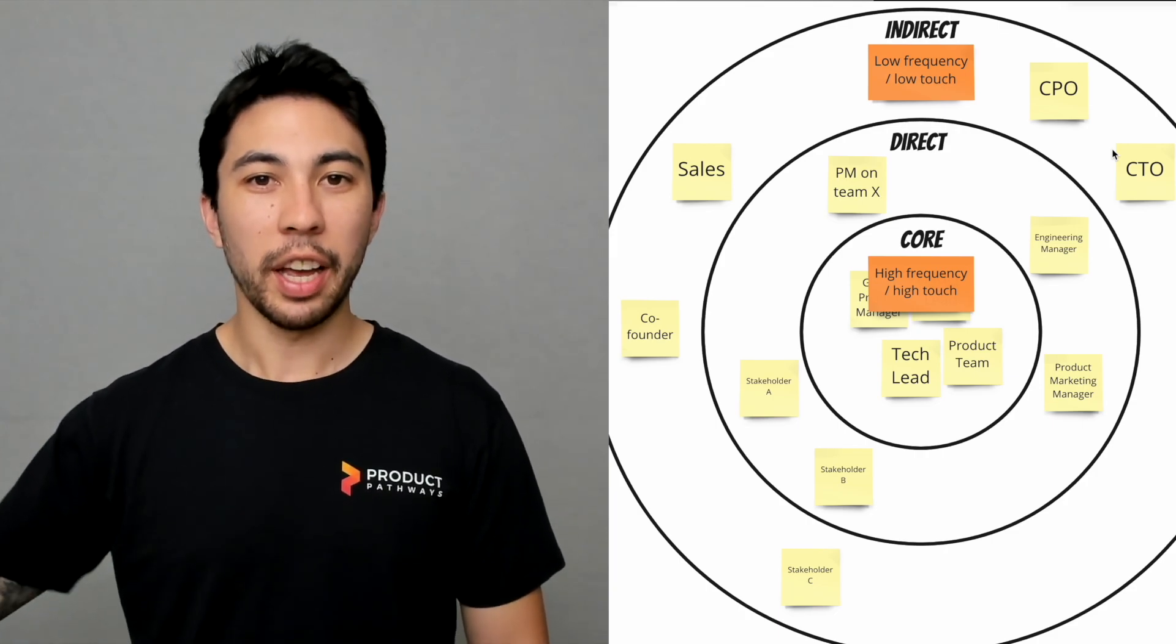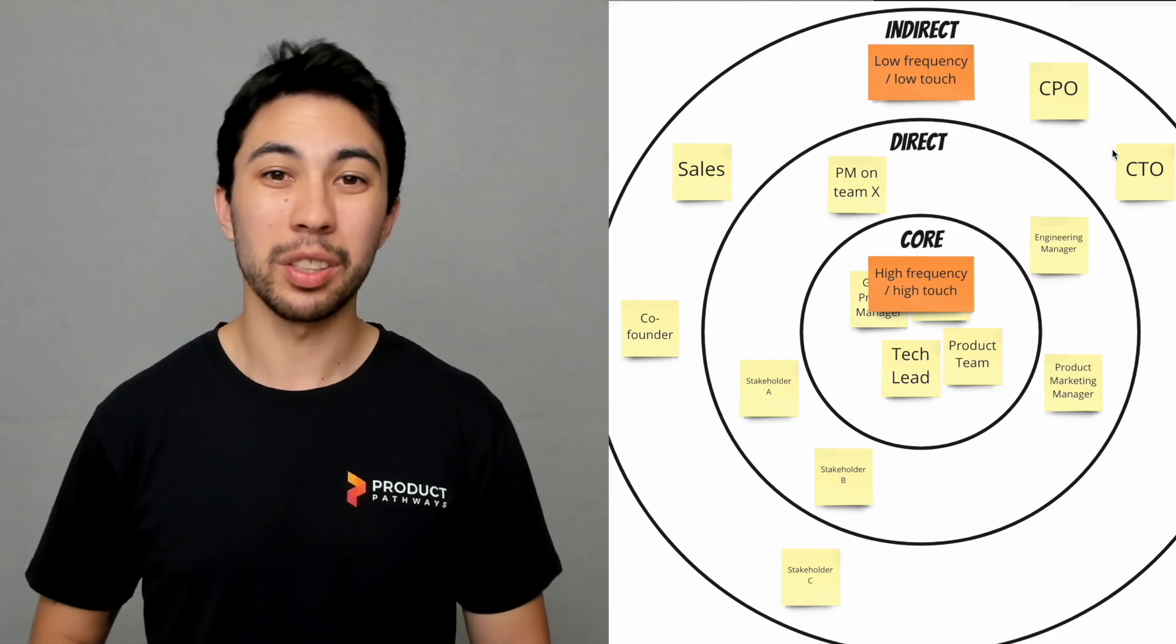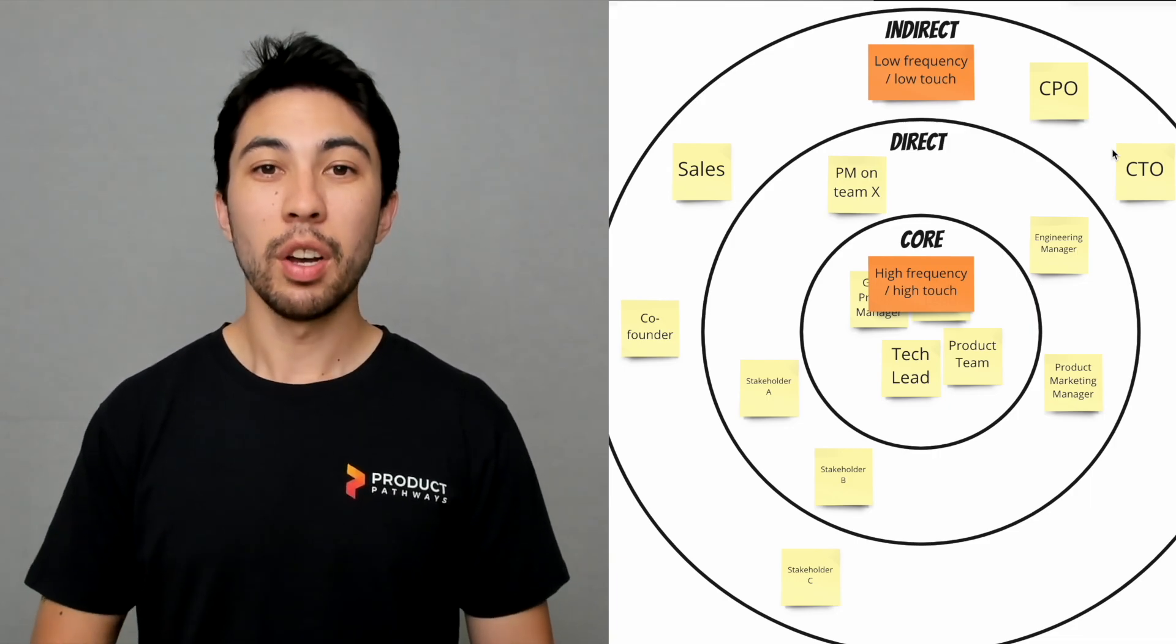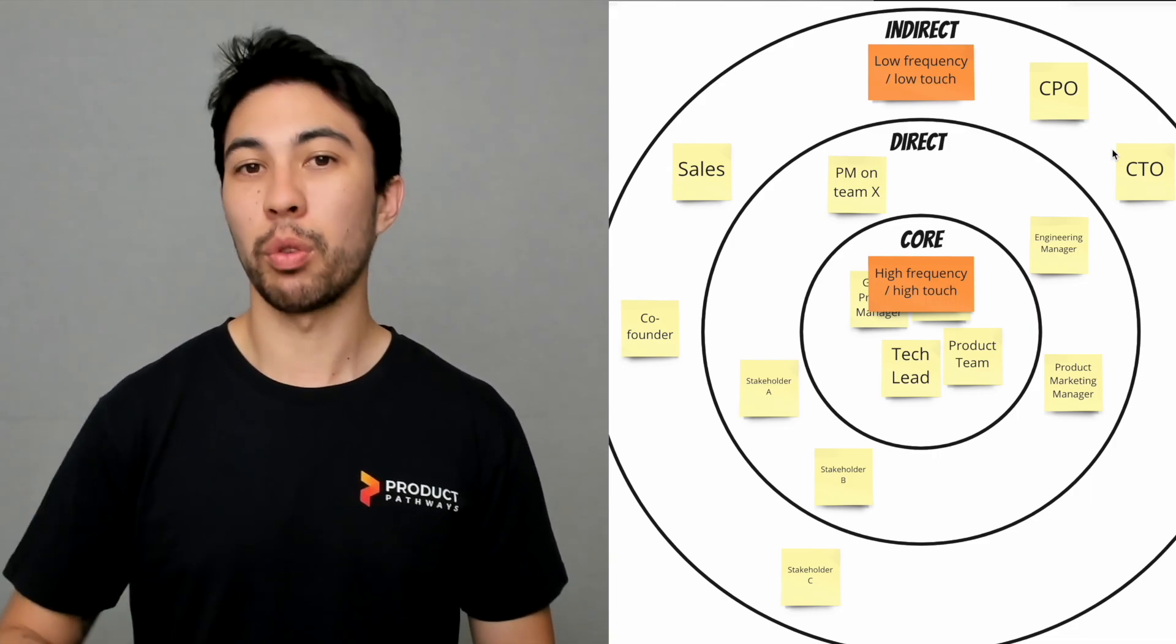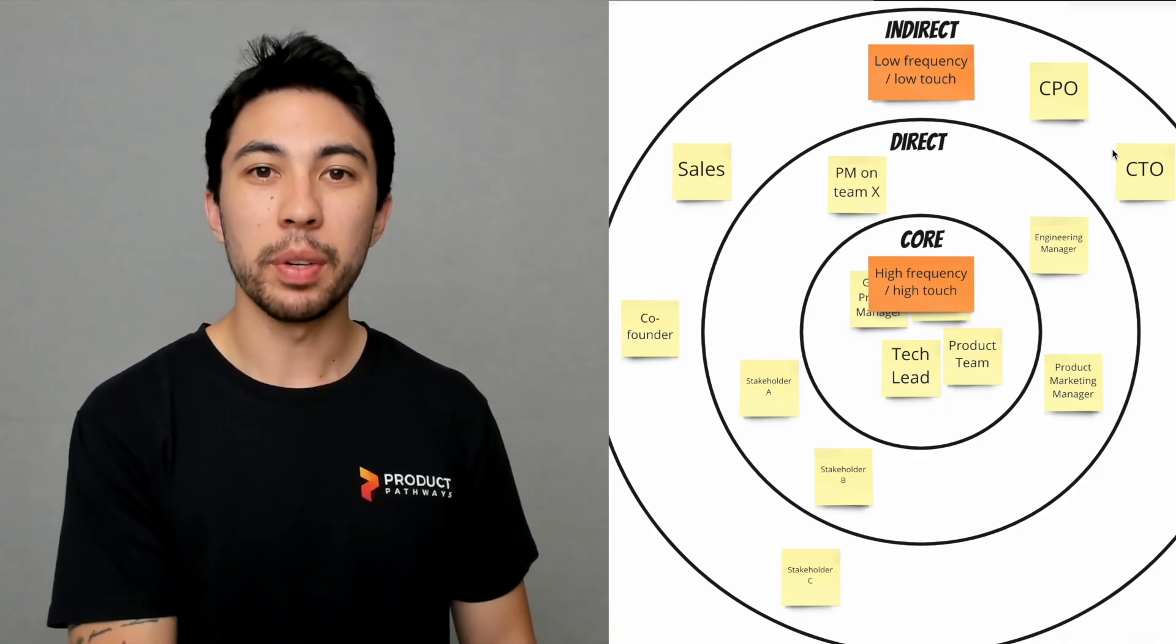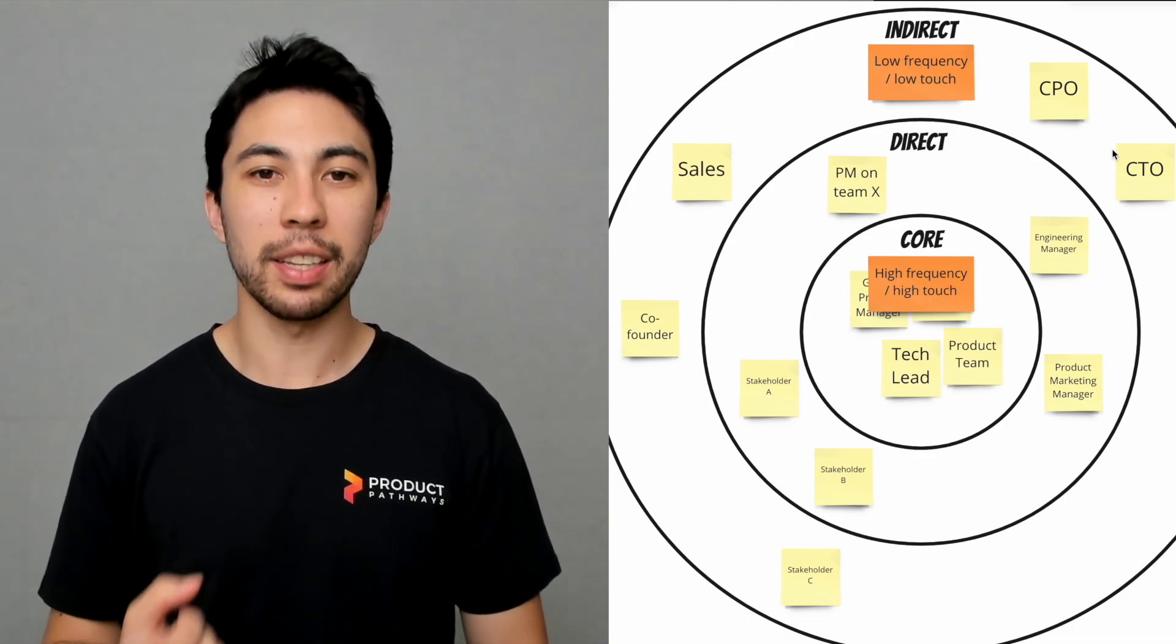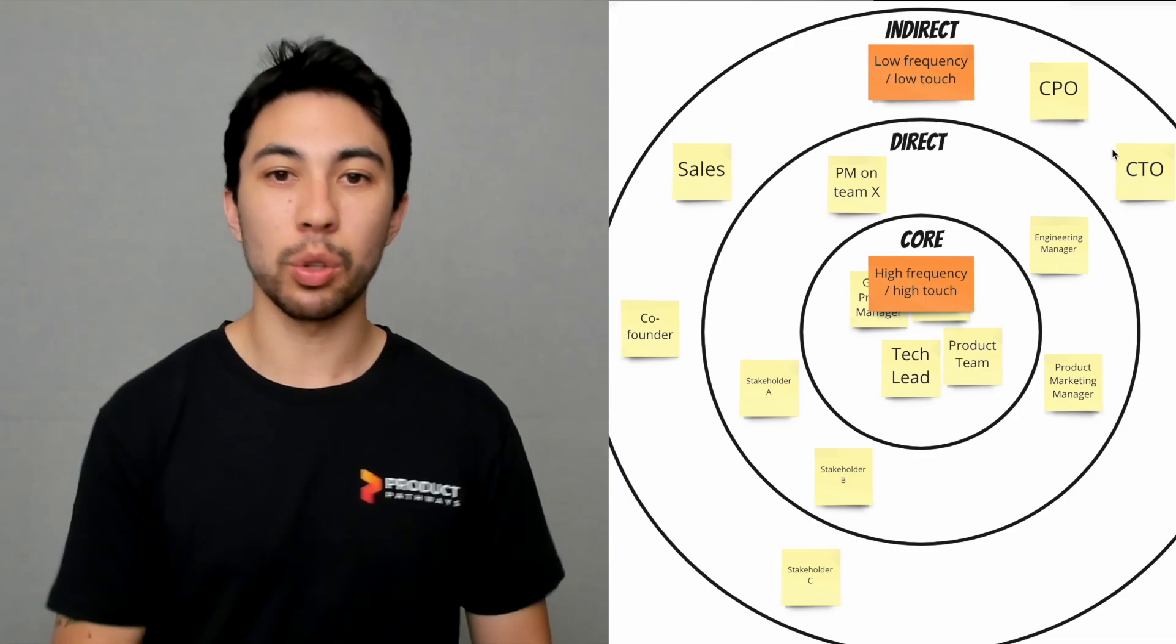And then the people in the further and the far out circles, we can allow that to be lower frequency and lower touch because they are a lower priority to us in terms of having a strong relationship with and a strong working relationship with. We still need to build a relationship with them, we still need to have a relationship so we can leverage it and we can influence, but it doesn't need to be as strong as those towards the center of the circle.